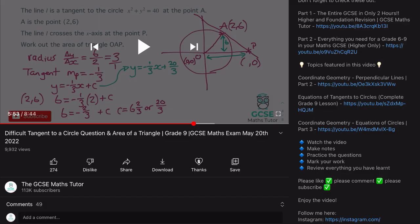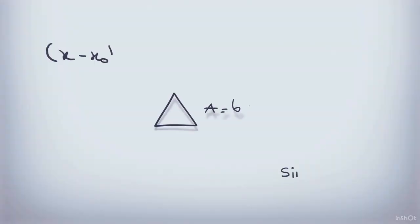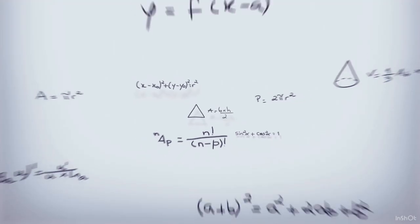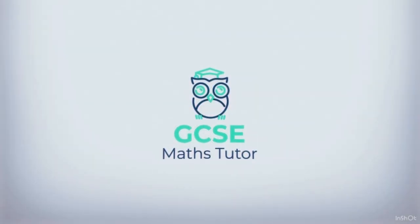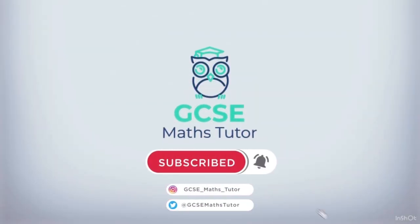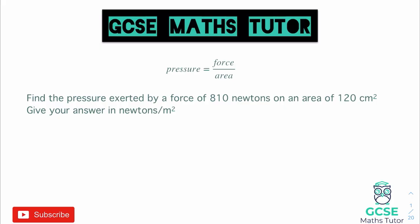With that being said, let's get started. Looking at our first question — when it comes to pressure, force and area, you will be given the formula. We've been told that pressure is equal to force over area. The question asks us to find the pressure exerted by a force of 810 newtons on an area of 120 centimetres squared, and to give our answer in newtons per metre squared. So we're going to have to do some unit conversions in this question.